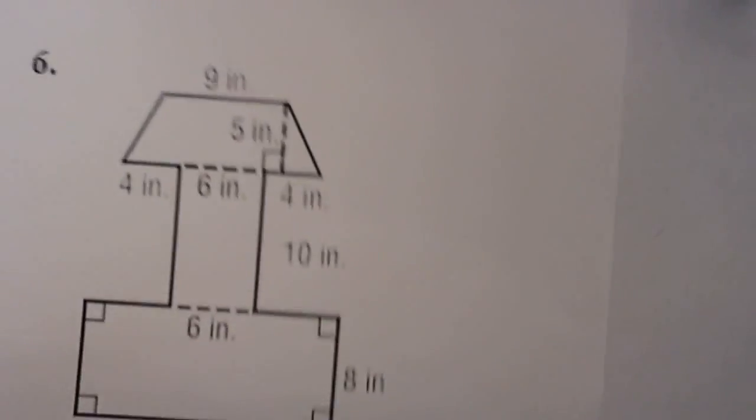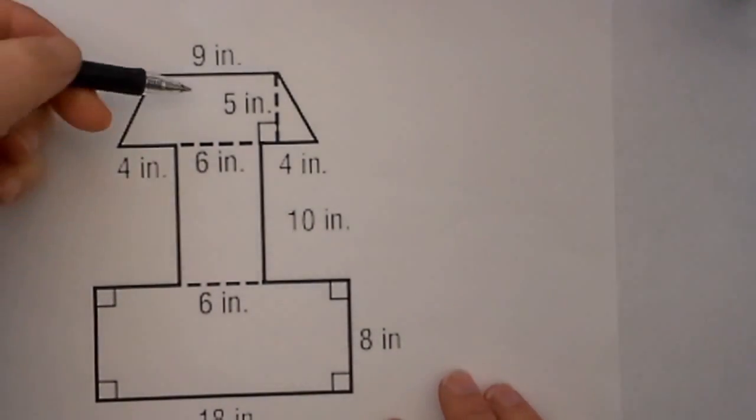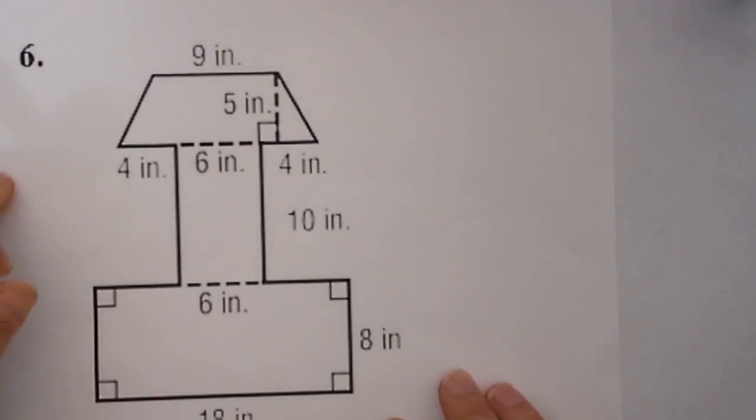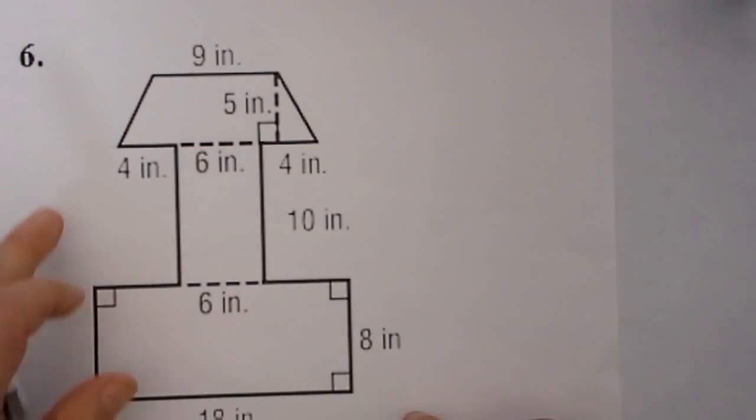Let's work one more. Here again is a strange-looking shape. Remember, step 1 is identify the different shapes, step 2 is to use their area formulas, step 3 you either add these areas, or if you have a shaded area, you may need to subtract them.